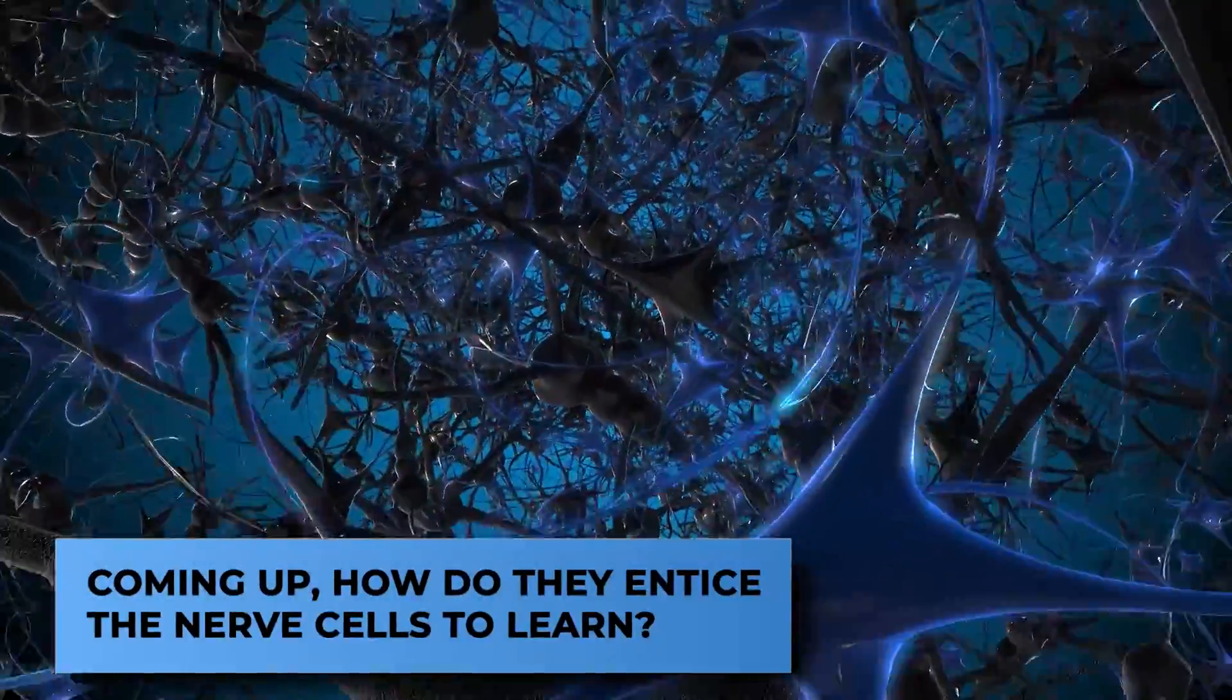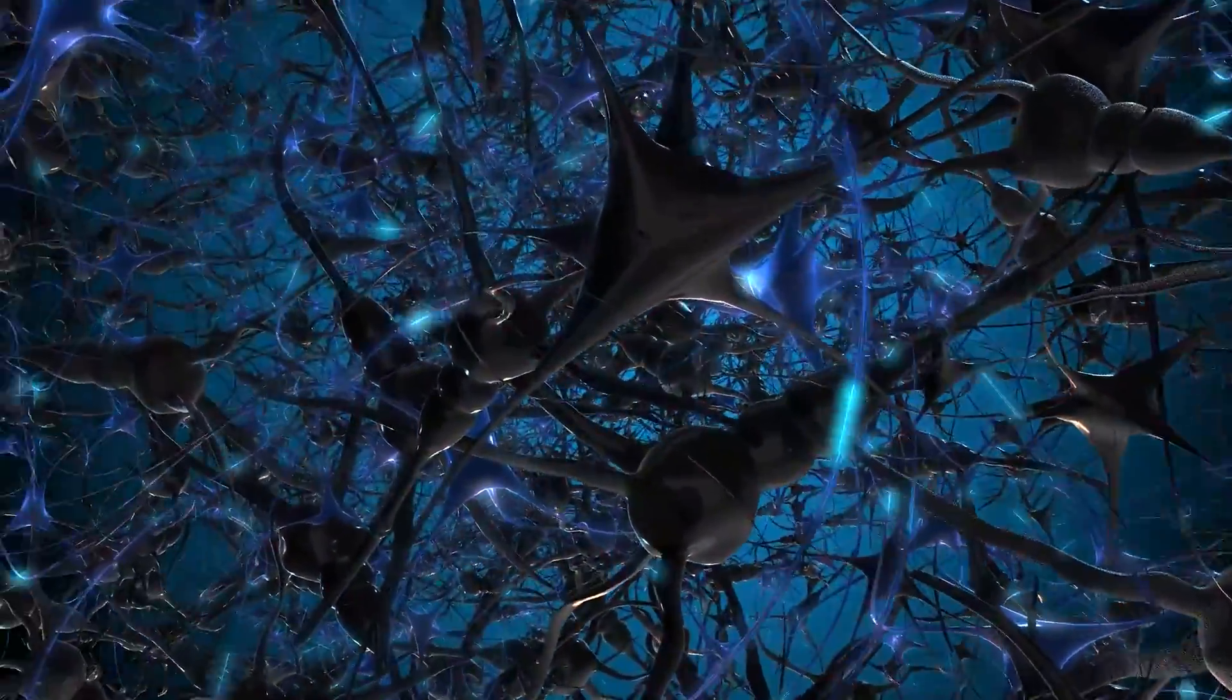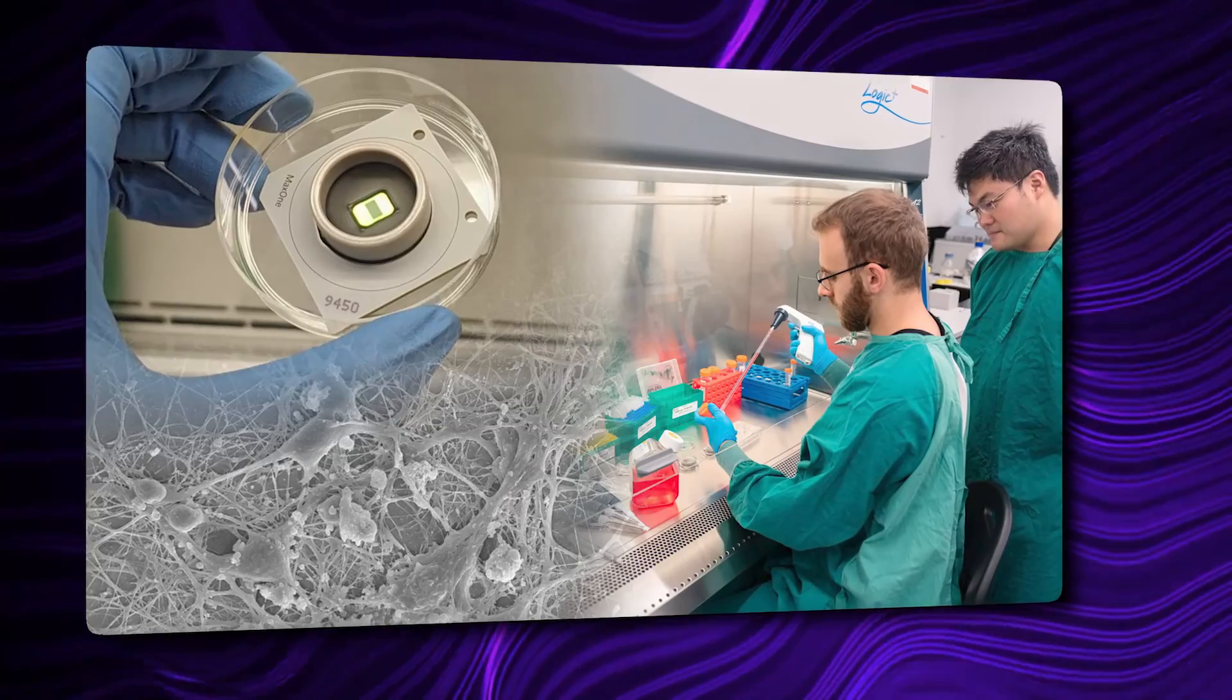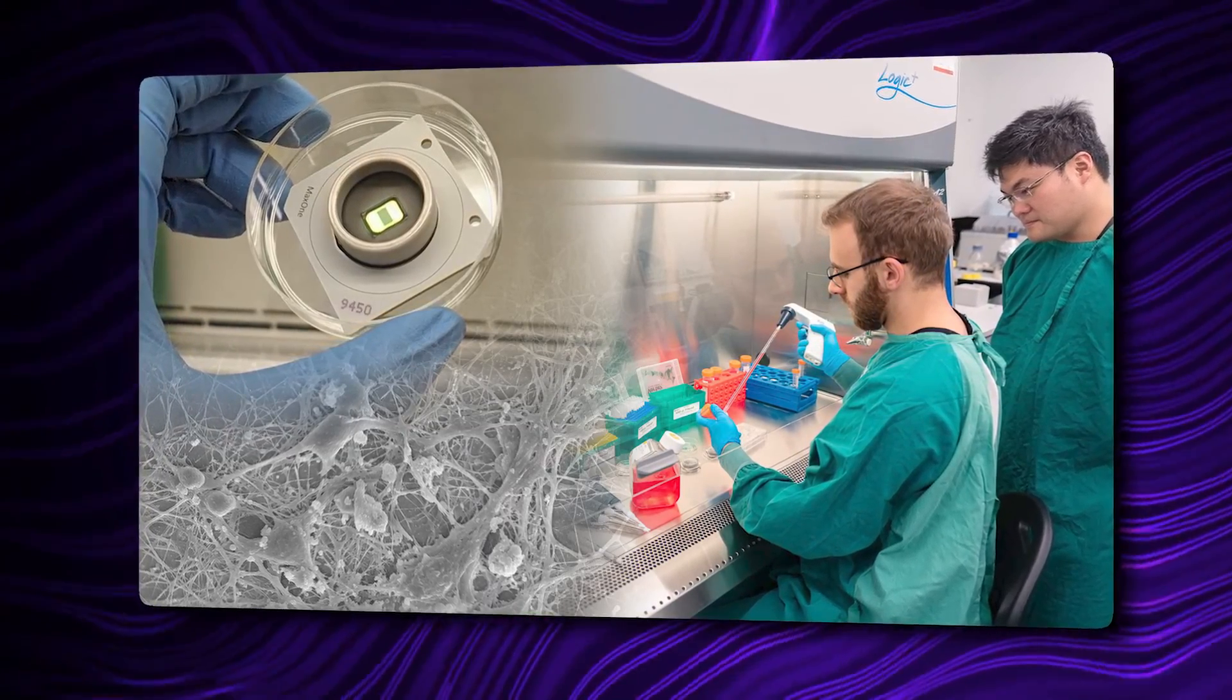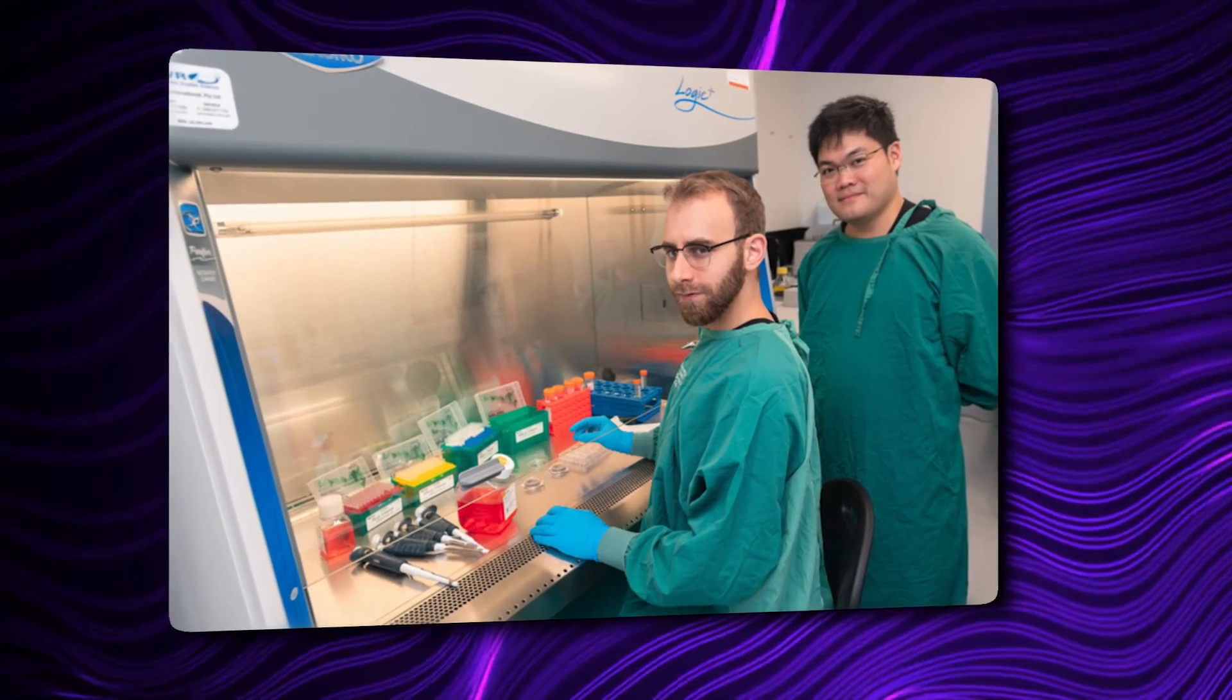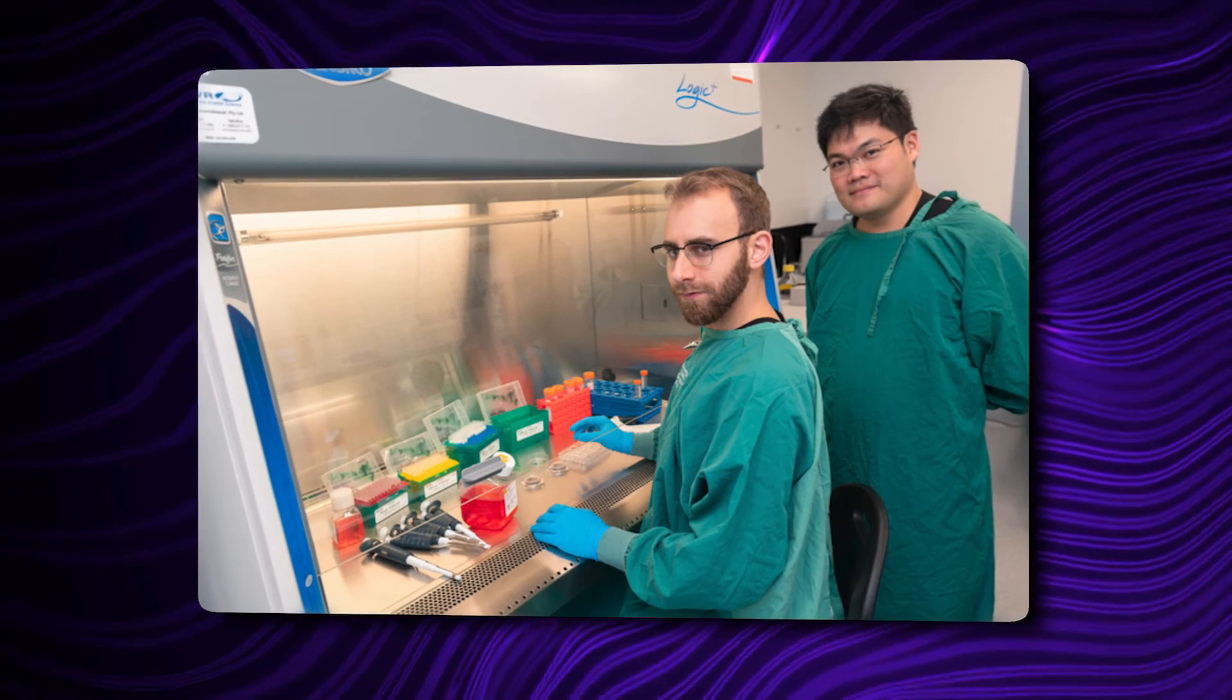How do they entice the nerve cells to learn? The researchers couldn't feed it like they could a dog or a monkey. The researchers decided to test the hypothesis that neurons seek to foresee what's happening around them. Giving Dish Brain something predictable would be the reward. And guess what? Even the cells on the dish adore the reward.